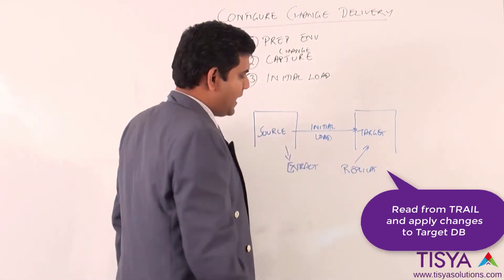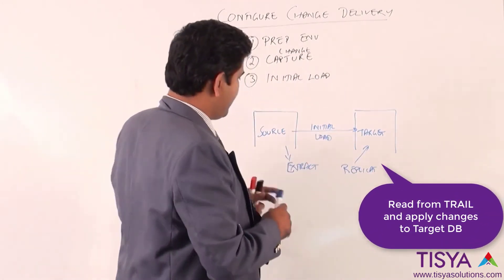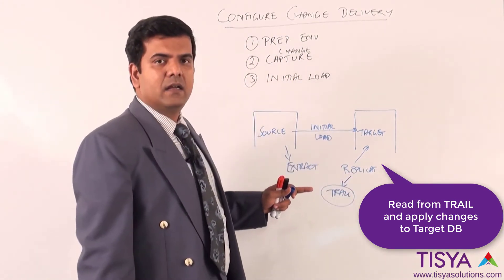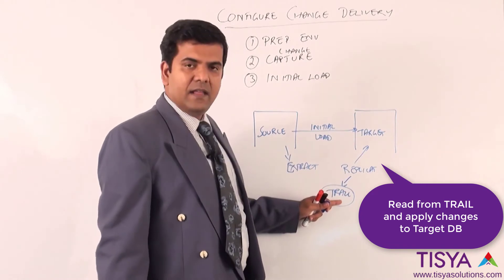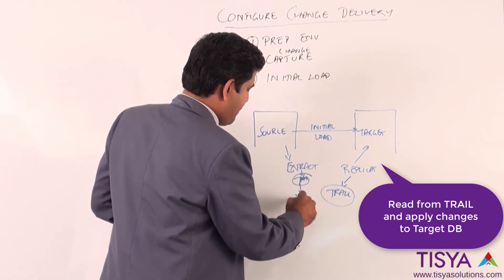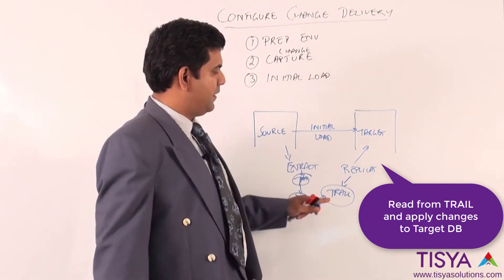The idea behind a replicate process is that it will read from a trail. The trail could have been written to by an extract directly, or a trail might have been written by the extract and then pump could have read from it and written to the remote trail which the replicate is going to read and apply.